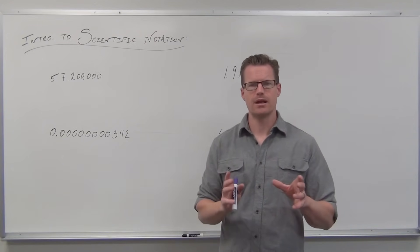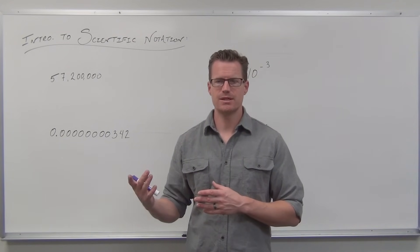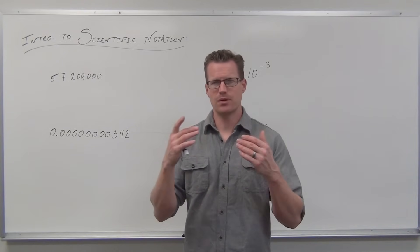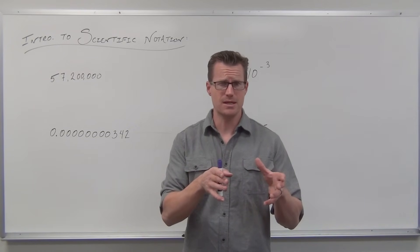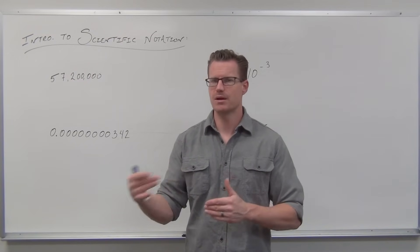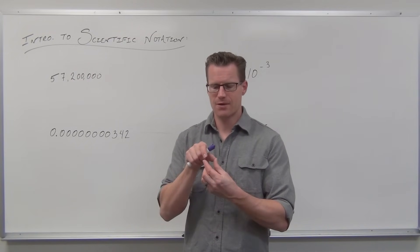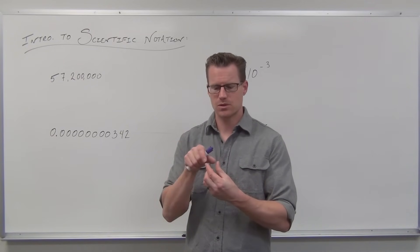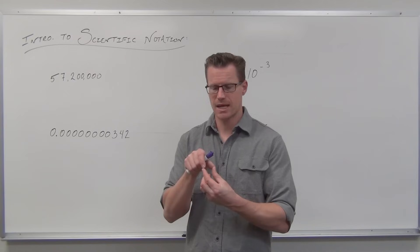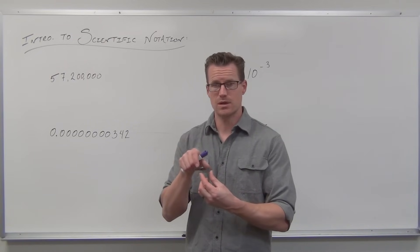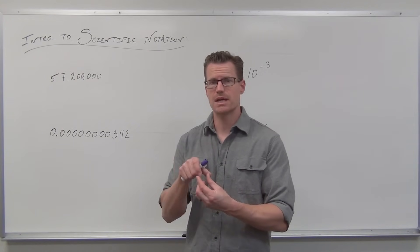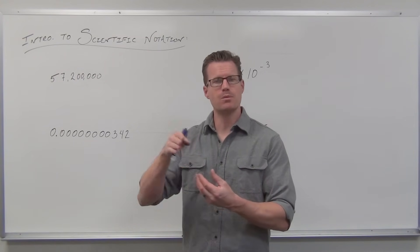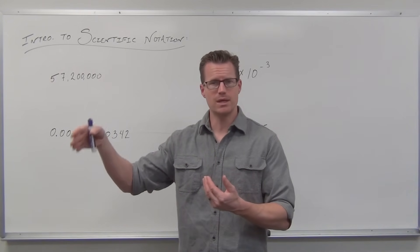So instead of doing that, we come up with scientific notation, which is a way to use the place value system and the fact that we are a base 10 number system to our advantage. We are a base 10 number system, which means that every time you move a place value, you get another power of 10. From tenths to hundredths is 10 times 10. From tenths to hundredths to thousandths is 10 times 10 times 10 — or 10 to the second, 10 to the third, 10 to the fourth, 10 to the fifth. Every time we move an additional place value, we get a power of 10.